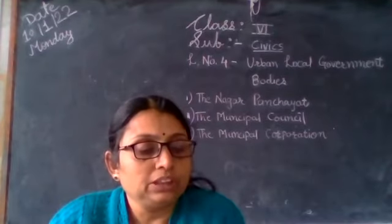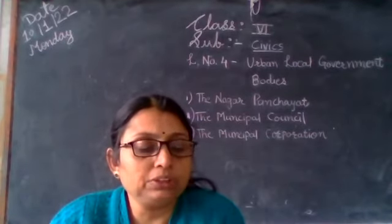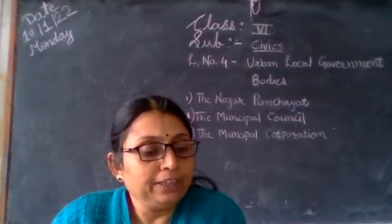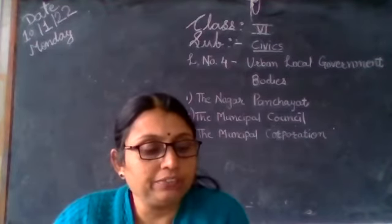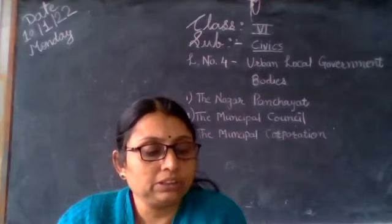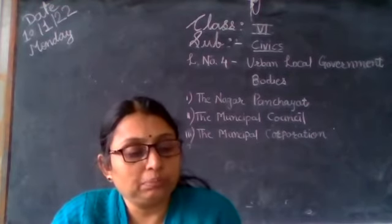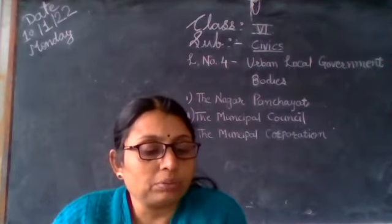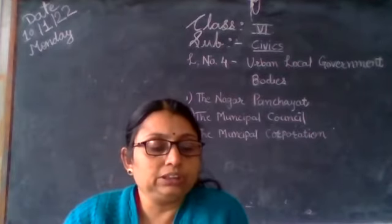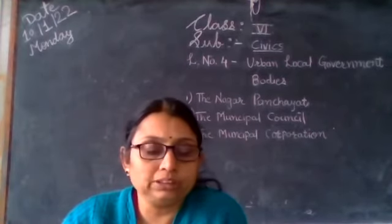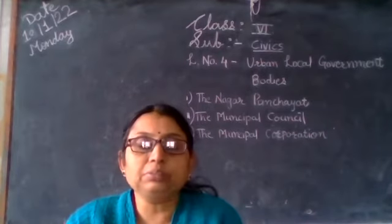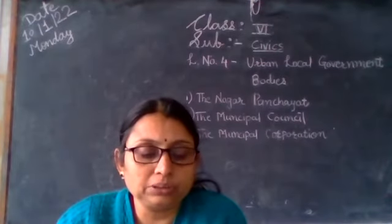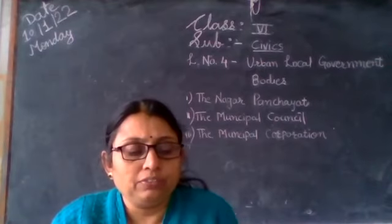The Municipal Council is the local government body for small cities. Elections to the council are held every five years. The elected representatives function as councillors. They choose a president from among themselves. The president of the Municipal Council is the chairman of all its meetings. He controls the working of the council and keeps a watch on the financial administration of the council.